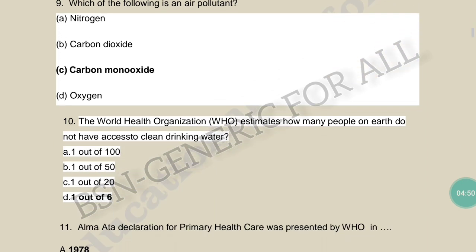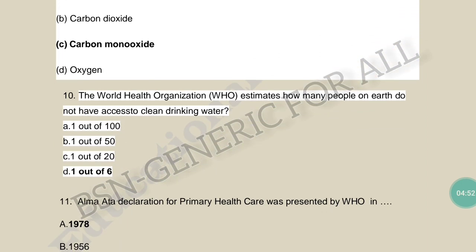The World Health Organization estimates how many people on Earth do not have access to clean drinking water. The options are: 1 out of 100, 1 out of 50, 1 out of 20, or 1 out of 6. The answer is 1 out of 6 — meaning for every 6 people, one does not have access to clean drinking water.